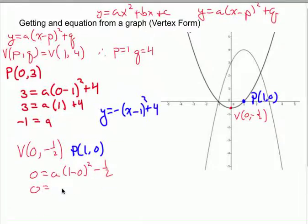So 0 is equal to a times 1 minus 0 is 1. 1 squared is 1, minus 1 half. So my a value is positive 1 half. And there I go.